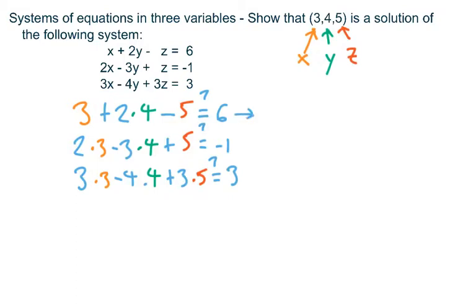So looking at the top equation and simplifying, we'd have 3 plus 8 minus 5. Is that equal to 6? Let's see. 3 plus 8 is 11 minus 5 equals 6. So yes, that turns out just fine.